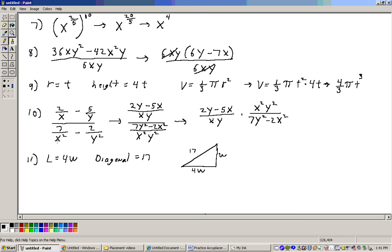What's in here that's not in there? A y squared, so it would be 7y squared. What's in here that's not in there? An x squared, so that would be minus 2x squared. So I'm dividing two fractions, which is the same as multiplying by the reciprocal. So it would be 2y minus 5x over xy times the reciprocal of this, x squared y squared over 7y squared minus 2x squared.